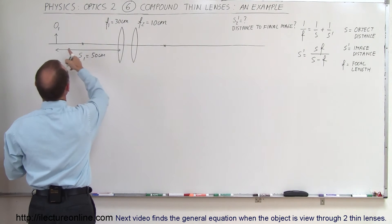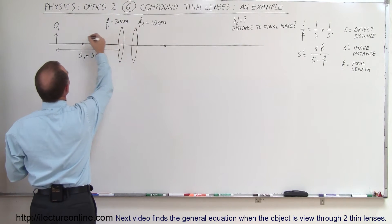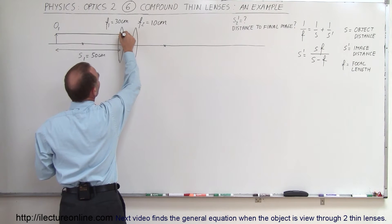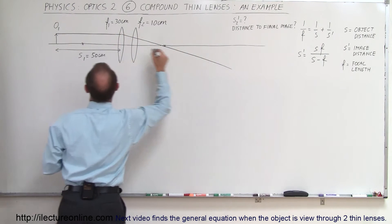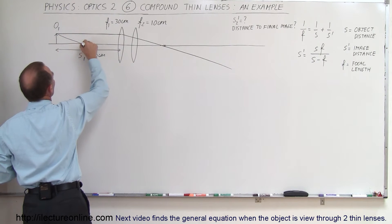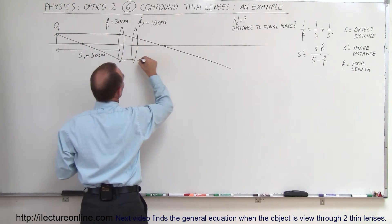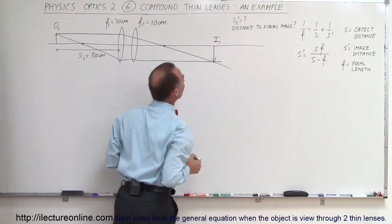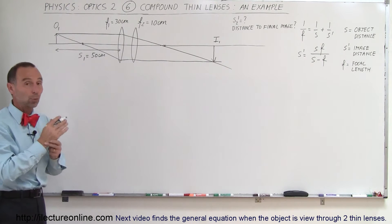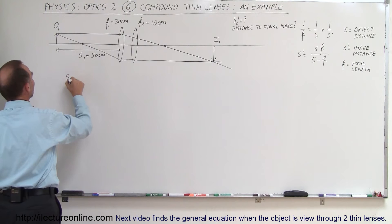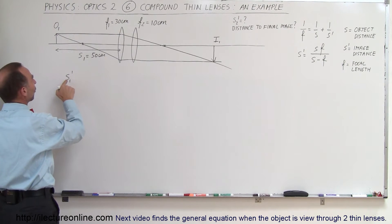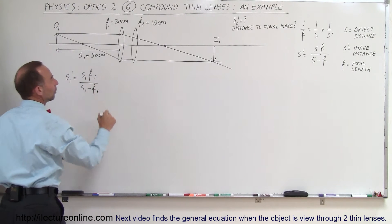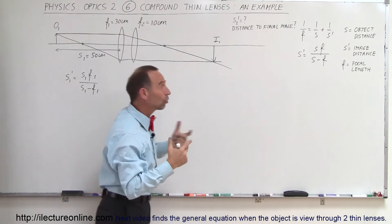To find the position of the image of the first lens, we can use ray diagrams. A ray comes to the lens, refracts, and goes to the focal point on the other side. Another ray goes to the focal point on the front side, then refracts and goes parallel to the optical axis. Where the two rays meet is the image position of the first lens. Using the lens equation: S1 prime equals S1 times F1 divided by S1 minus F1.